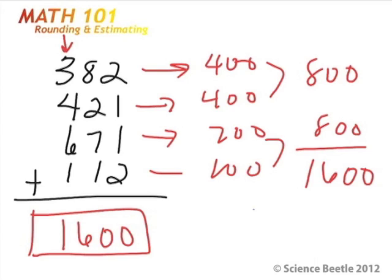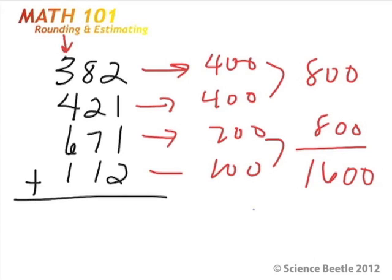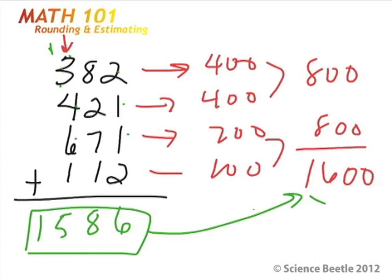I came up with approximately sixteen hundred for the answer. You may still be working on it yourself, but notice the difference — because I was able to round and estimate, I was able to come up with the answer fairly quickly compared to the long way of adding all these numbers. If I were to add all these numbers the long way: 2 plus 3 is 4, 4 plus 2 is 6, then 8 plus 2 is 10, plus 7 plus 8 is 18, carry the 1... and so on. The answer there is slightly different, but the estimated answer is very close. So now you see why estimating is very important.